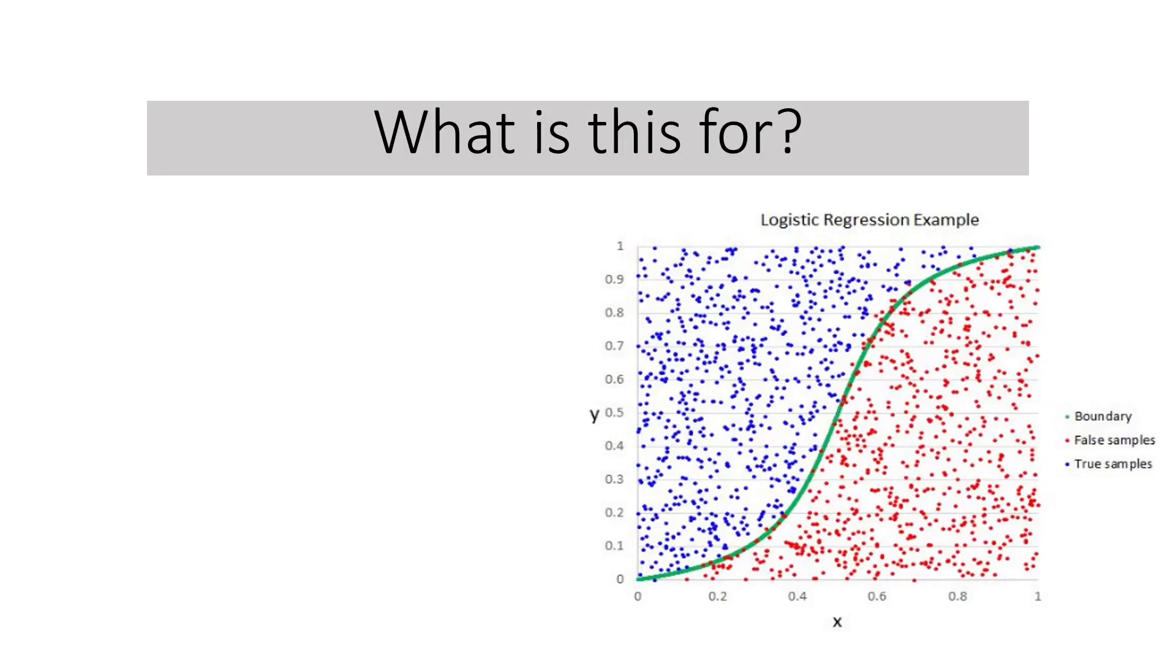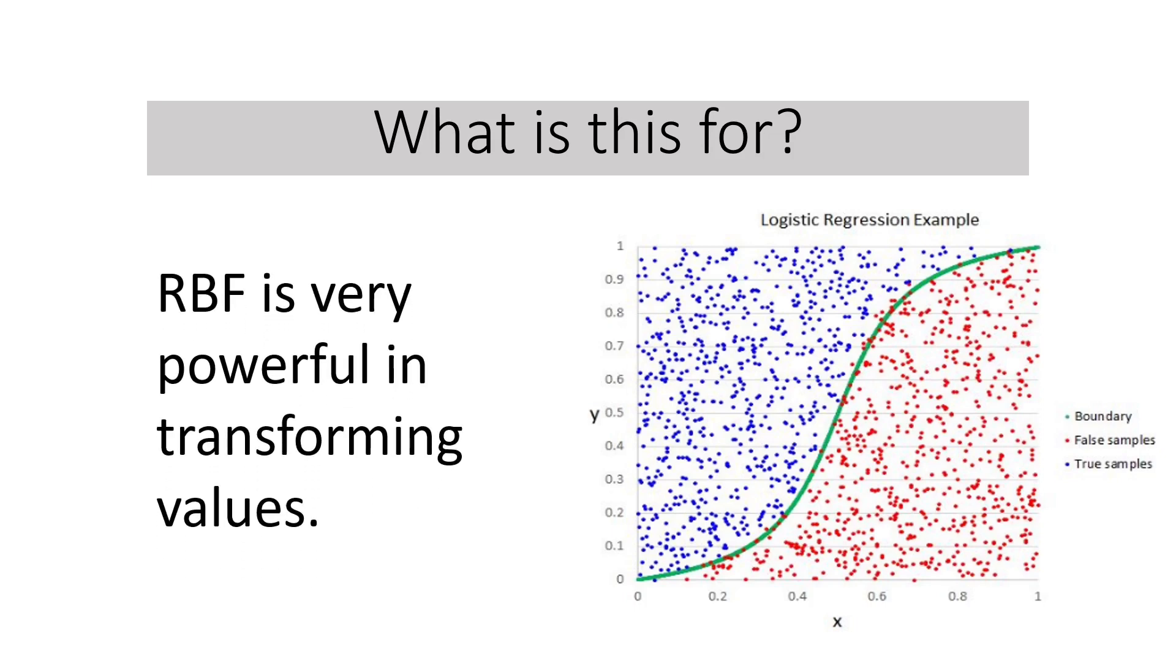What is this for? Why do we have to study this? The main idea of using kernel is this: Radial basis function is very powerful in transforming values. Since radial basis function kernel uses an exponent, this makes the regression or classification line more robust and powerful.